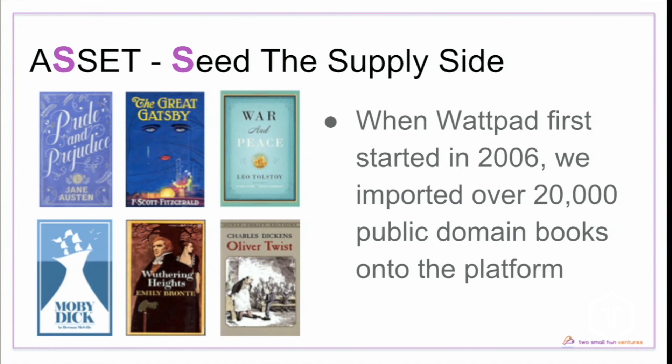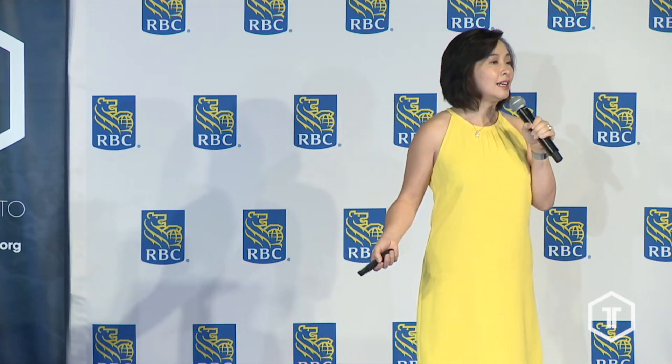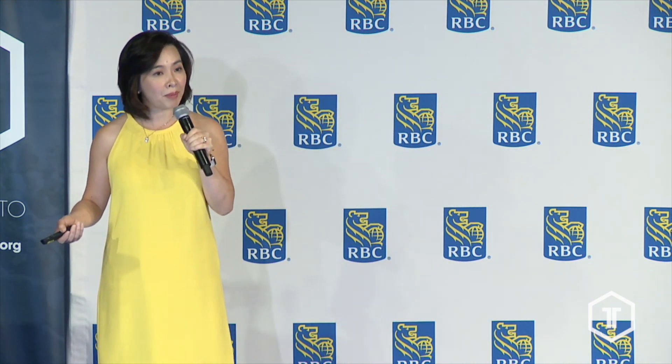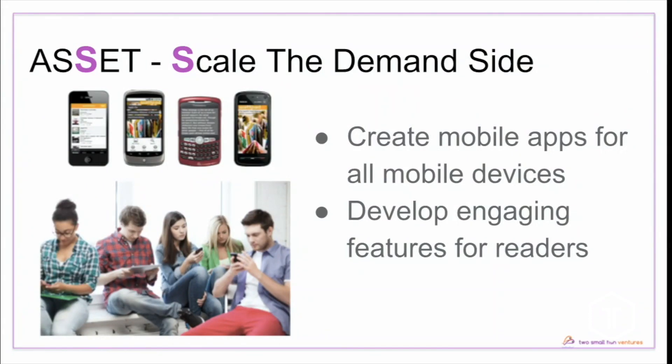Wattpad did that by importing over 20,000 public domain stories — such as Pride and Prejudice and Moby Dick — onto the platform. The idea was to allow some readers to find stories to read on our platform and build the habit of reading on Wattpad, and by doing that it would help us start attracting more readers to come and share their original work.